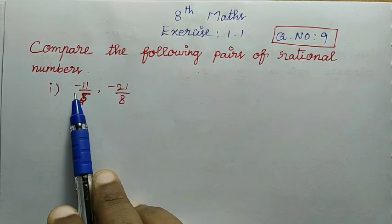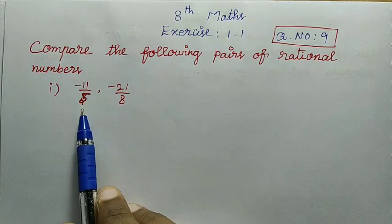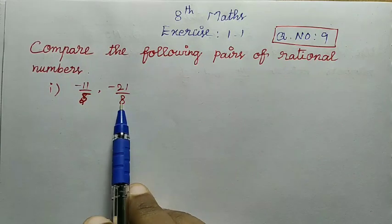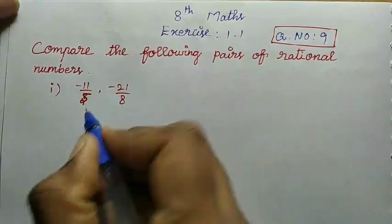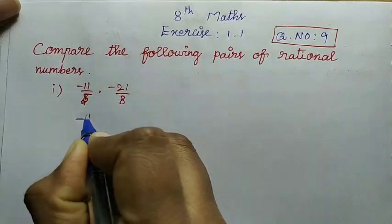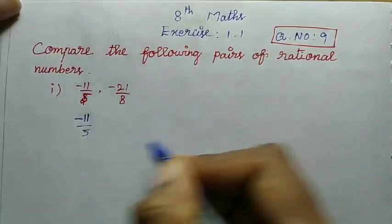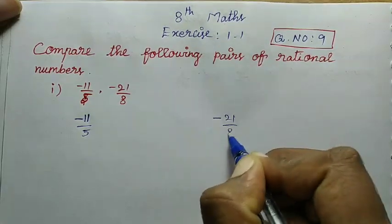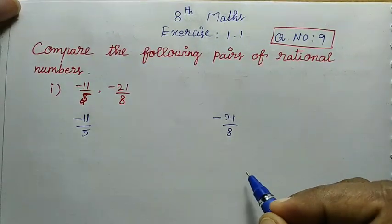First question: minus 11 divided by 5, then minus 21 divided by 8. In rational numbers, you can compare the numbers. Minus 11 divided by 5, then minus 21 divided by 8 — you can compare the rational numbers.